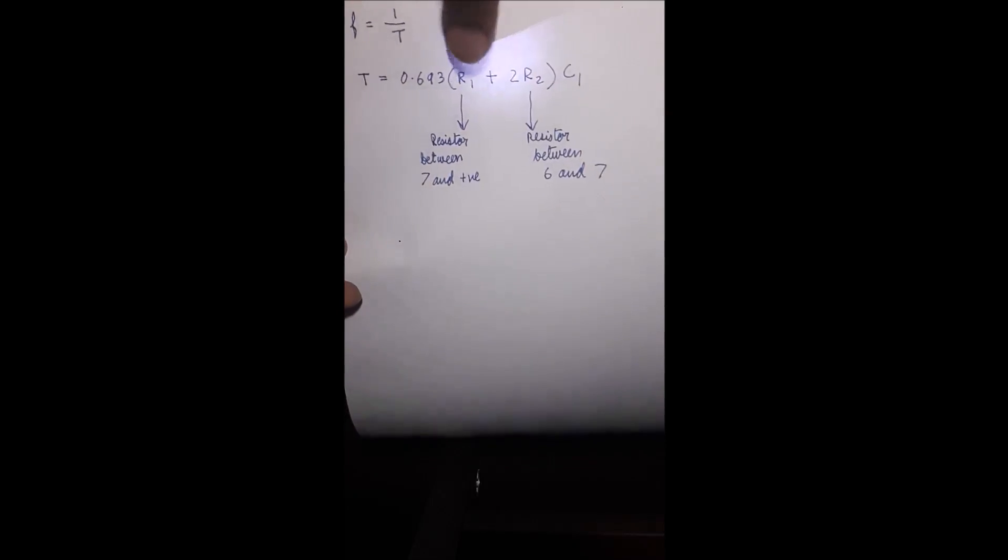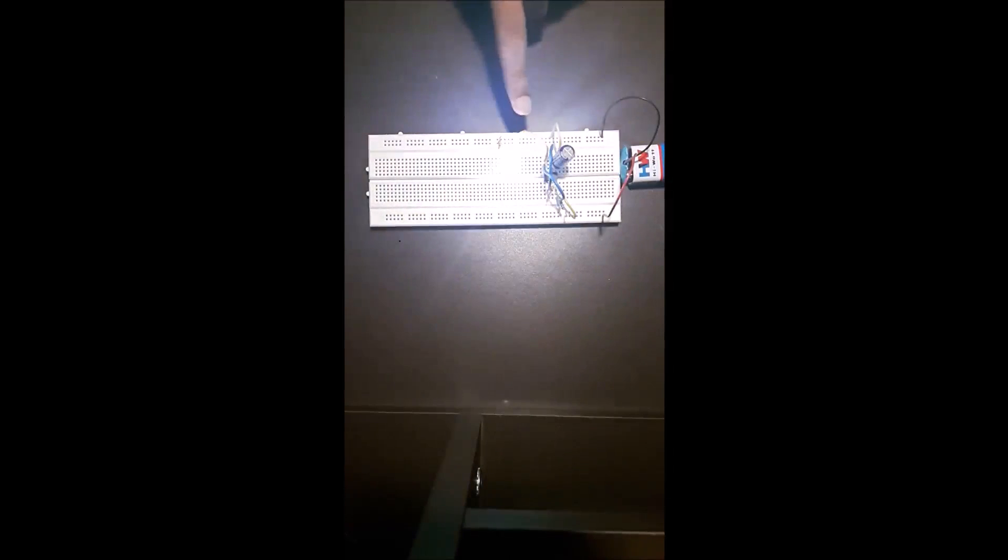By changing the values of R1, R2, and C1 you can change the frequency. In this circuit, the frequency is approximately equal to 1 second.